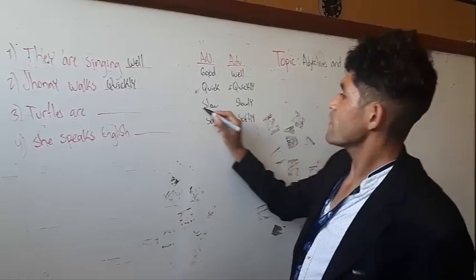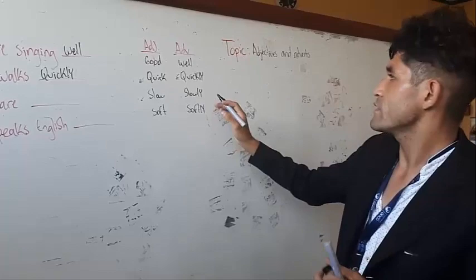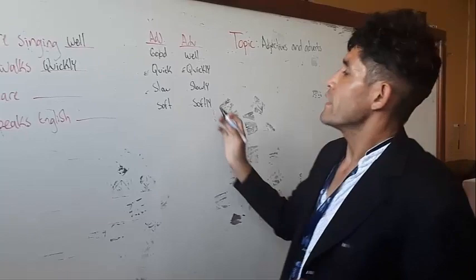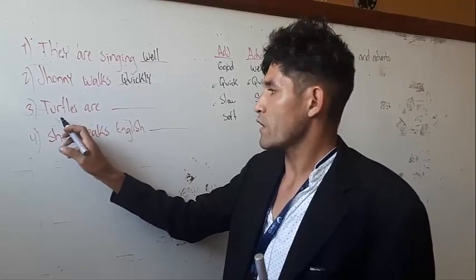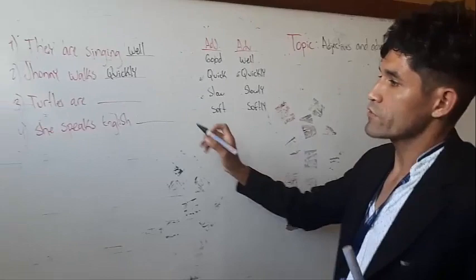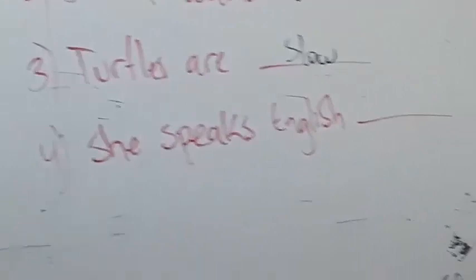Tortoises — are they slow or slowly? In this case, we are going to use the adjective. Tortoises are slow. Then: 'She speaks English — soft or softly?' In this case, I am going to choose softly.